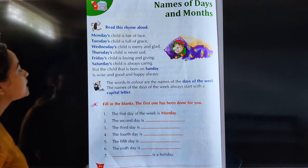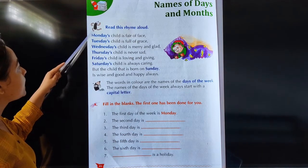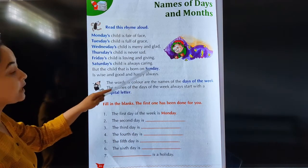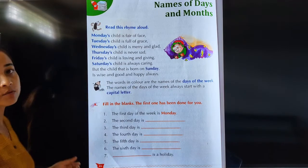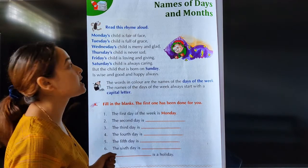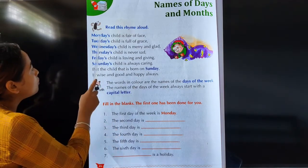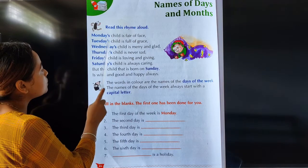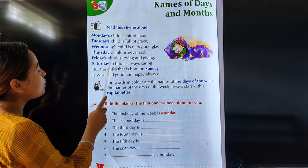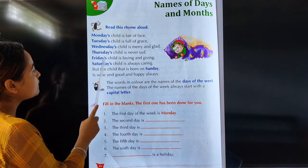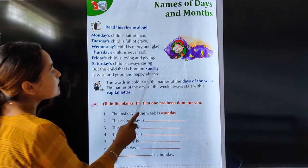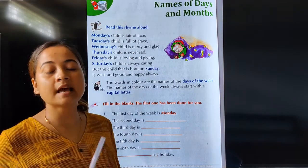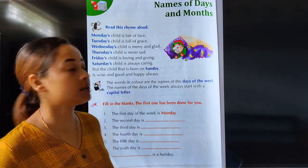So these are the names of the days. Let us count how many days there are: 1, 2, 3, 4, 5, 6, 7. There are 7 days.